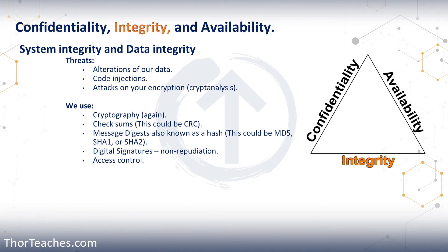Integrity and confidentiality are closely tied together — if one is not effective, the other won't be either. If we're keeping our data completely secure in confidentiality but someone can change it, then it's not viable or usable data anymore. The other way around, if we have great integrity but the confidentiality is breached, then the integrity might not matter either. The threats against integrity are very similar to the ones against confidentiality — here they're changing our data, which could happen through code injections or attacks on our cryptography.